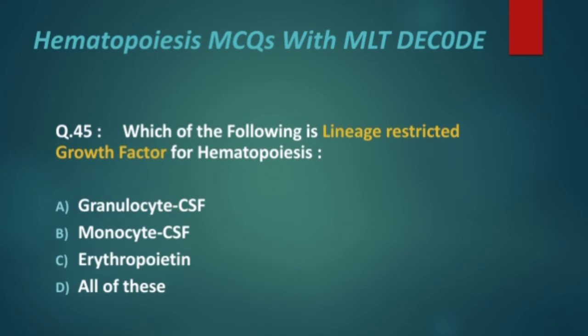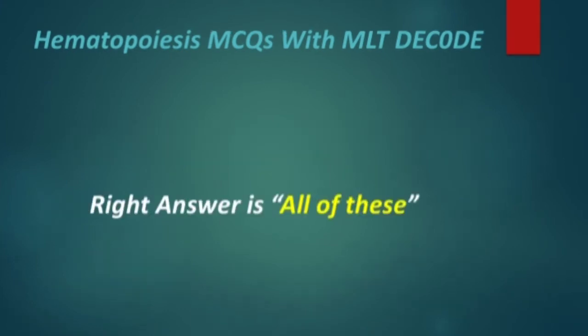Next, MCQ 45: Which of the following is a lineage-restricted growth factor for hematopoiesis? Options are: granulocyte colony-stimulating factor, monocyte colony-stimulating factor, erythropoietin, and all of these. The right answer is all of these.